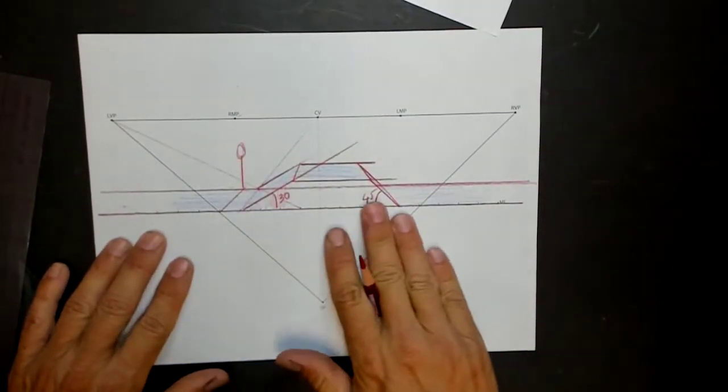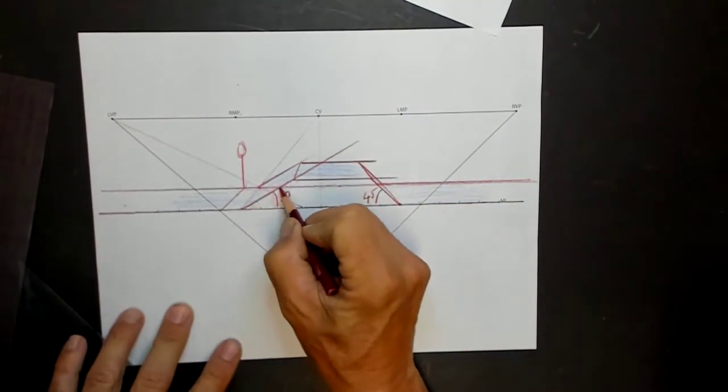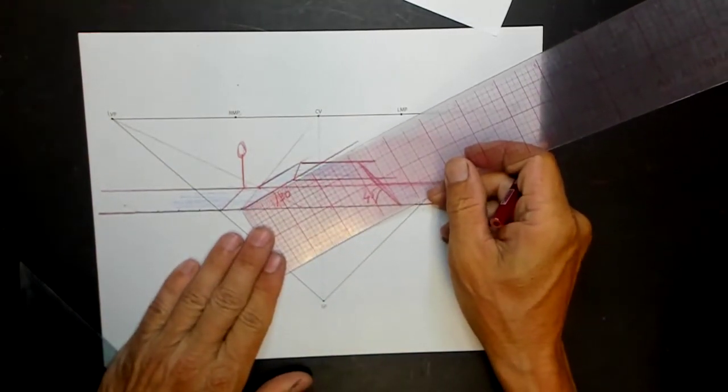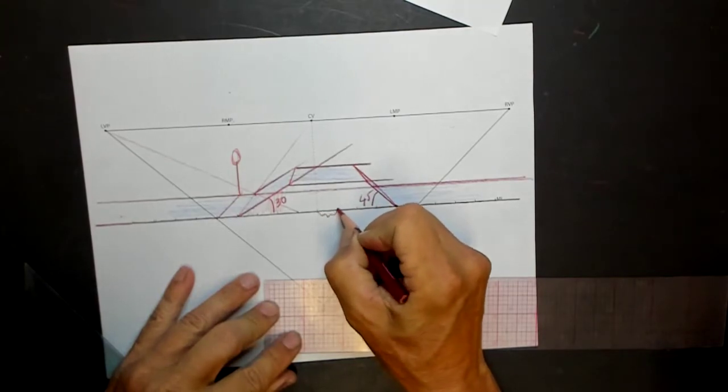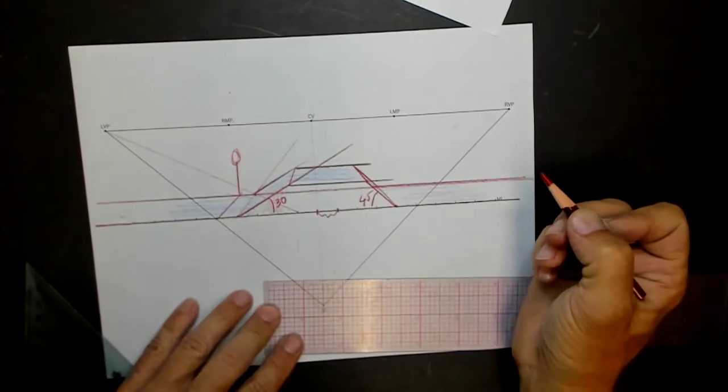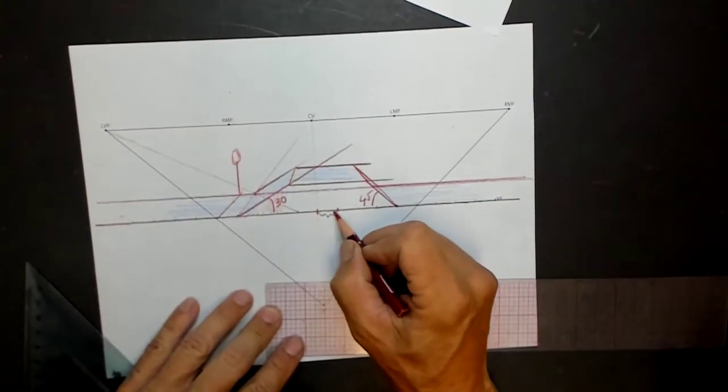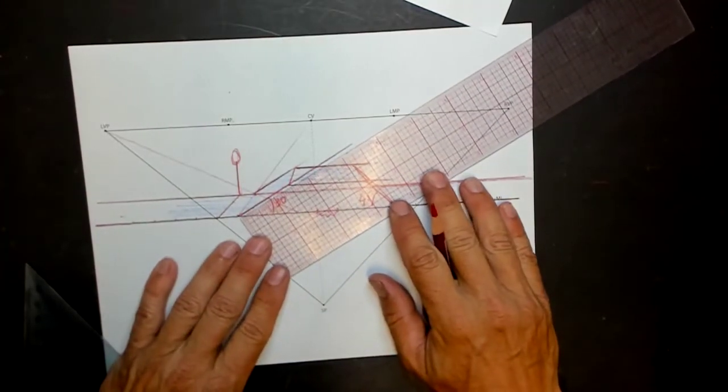Since this is parallel to the picture plane and it's touching the picture plane, if I wanted to know how long this is, I could just take my ruler. Each one of these are a unit, and I could make them anything I want - mile, kilometer, whatever. I can make this equal whatever. So I'll continue to call them units.